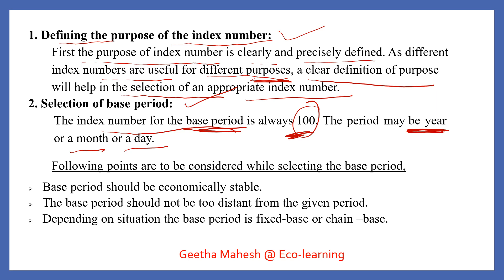Index numbers represent a comparison between two different years or two different localities. For example, you might compare today's price to last month's price, or compare prices across different years. The following points are to be considered while selecting a base year.